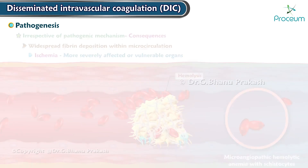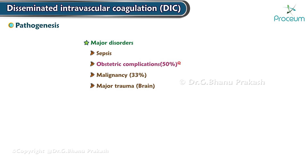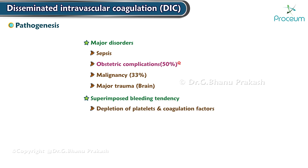Major disorders associated with DIC include the most common being sepsis, obstetric complications, malignancy, and major trauma especially to the brain. There is also a superimposed bleeding tendency due to depletion of platelets and coagulation factors, and secondary release of plasminogen activators.